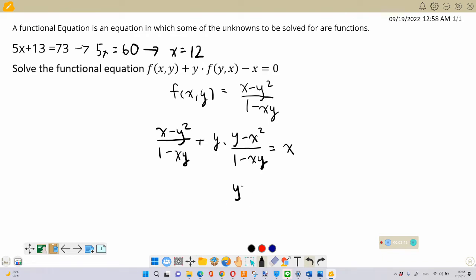And if we multiply the second fraction we will get y squared minus x squared y over 1 minus xy. And the first fraction stays as it is, so that's x minus y squared over 1 minus xy.